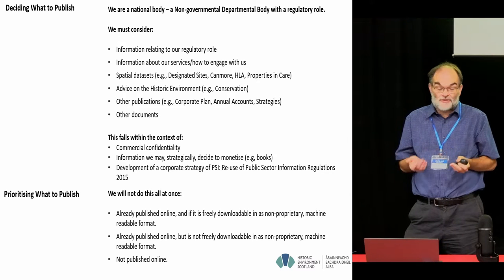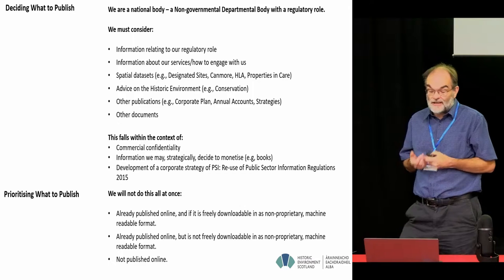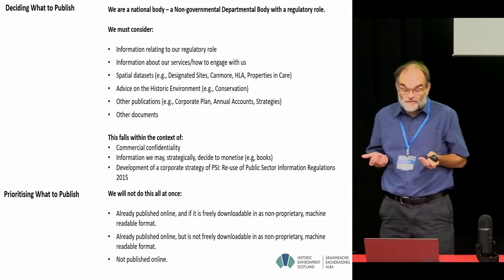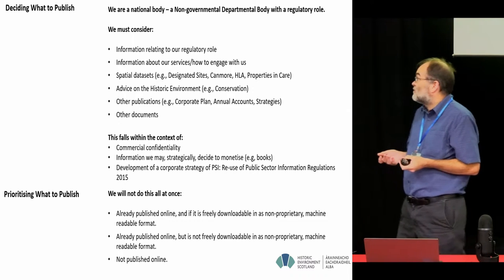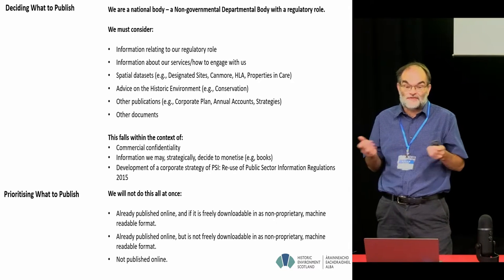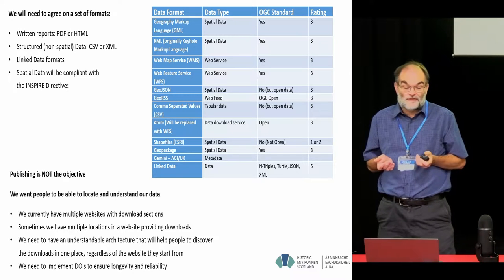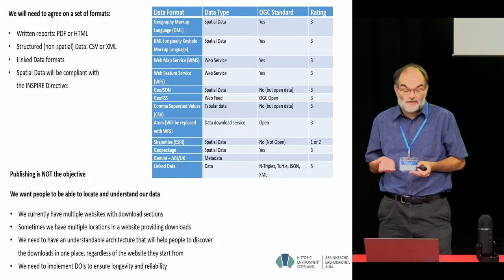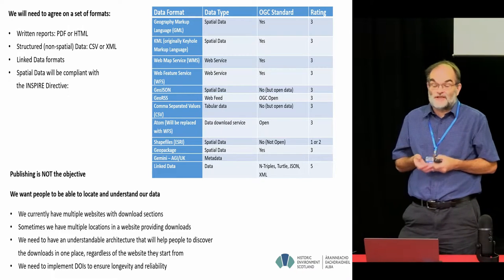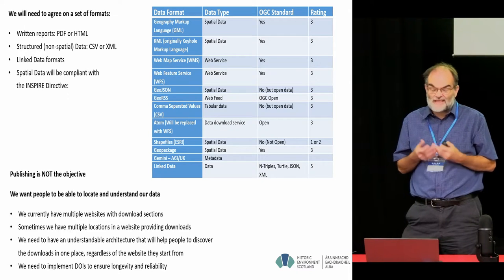We also need to prioritize — we can't do everything at once. We have to decide what we can publish, what's already published online that's freely downloadable in a non-proprietary format, what's freely available online but can't be downloaded, and then the material we haven't published at all. There's a lot to think about across an organisation of five directorates and 1,200 staff. We also need to think about default formats — PDF, HTML, CSV, linked data formats — and for spatial information, what format is appropriate and actually reusable.